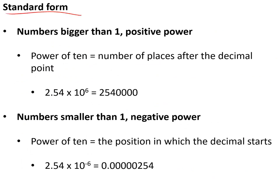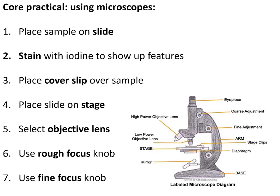Standard form is a way of representing numbers that are very big or very small. For example, 2.54 × 10⁶ — that six tells you how many places after the first number. For numbers smaller than one, they have a negative power, for example × 10⁻⁶ — the power tells you which decimal place you start writing your number on.